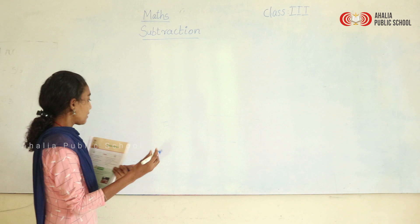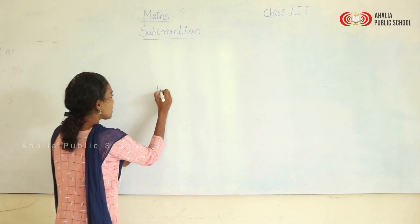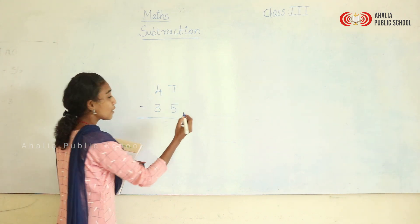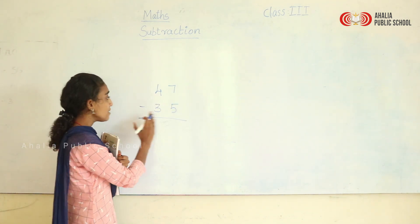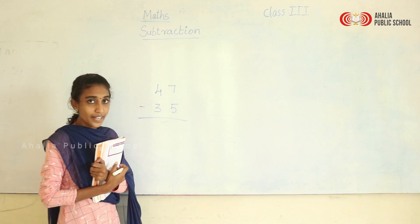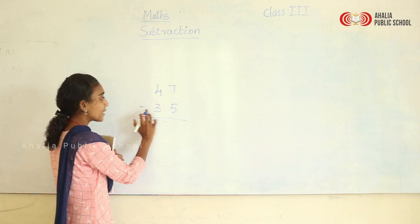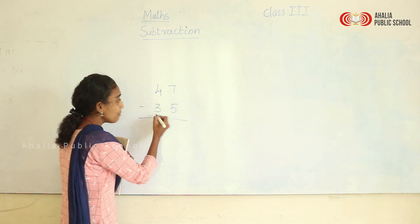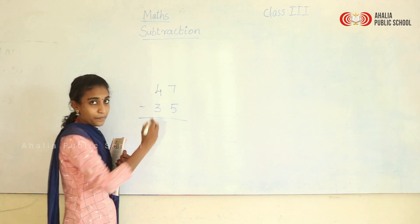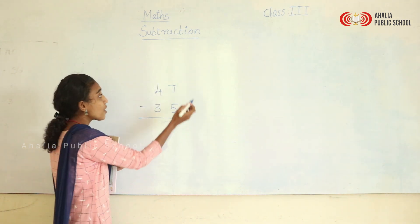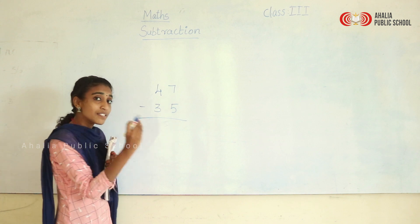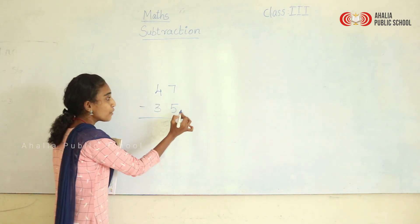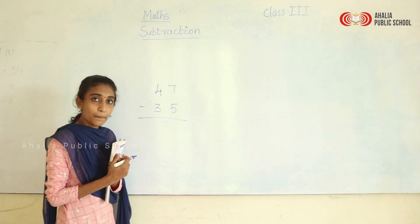Before moving on to the topic, have a look at this question: 47 minus 35. This means we have to subtract 35 from 47. Here 47 is the bigger number and 35 is the smaller number. Usually we subtract a smaller number from a bigger number.